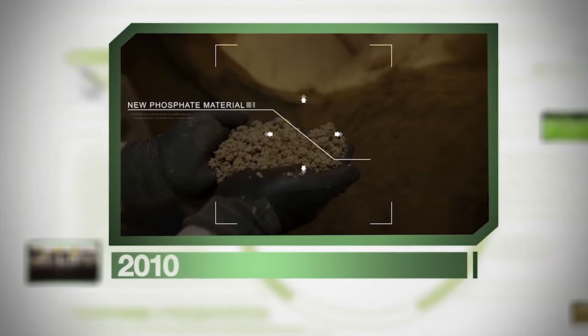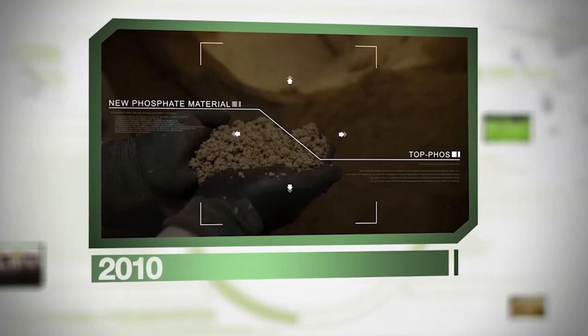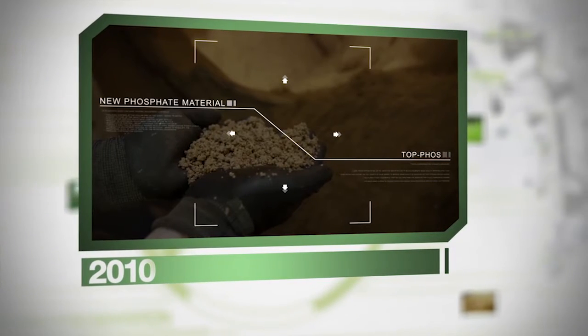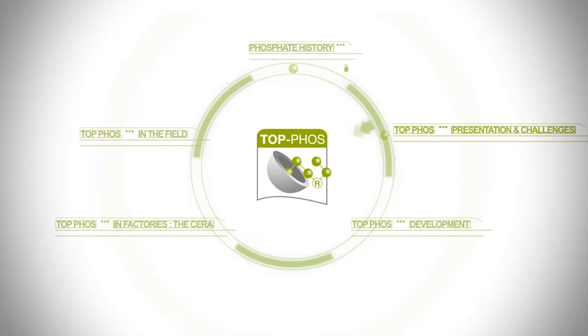2010 Topphos. This is a major innovation for the group and for fertilizers. It consists in a new phosphate raw material that is protected, and we're going to see how the group has developed this innovation.